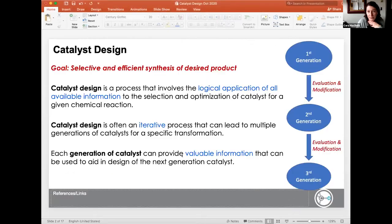So for those of you that are undergraduates, you might be thinking, how do you even get started? You have a chemical transformation that you want to do. How do you know which catalyst to pick? When we talk about catalyst design, our ultimate goal is really to develop a selective and efficient synthesis of a desired product. And it's important to realize that catalyst design is a process that really involves using all the logical information available and applying that information to the selection and optimization of a catalyst for a specific chemical transformation.